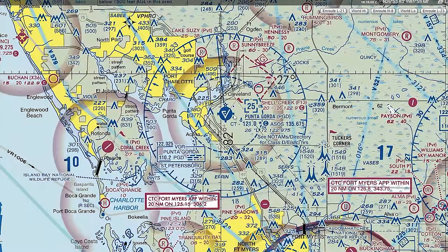The little dashed lines coming from the airport circle denote that services are available — typically fuel or maintenance. Coral Creek has no such lines and is also marked PVT for private, so you wouldn't land there. Airports like La Belle, Punta Gorda, and Venice have those service marks, so you can expect to find fuel there. Not necessarily open 24/7, but during the day you could expect to find a fuel pump.